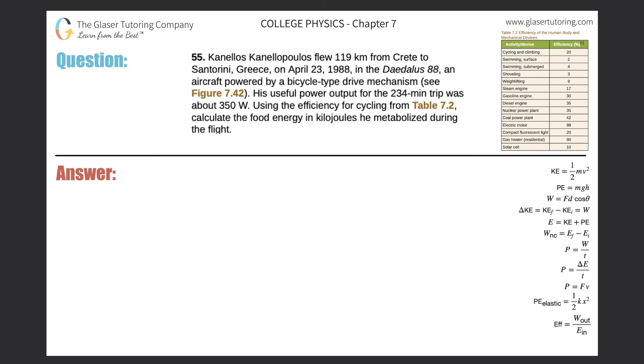Number 55. Canelos Kalanopoulos flew 119 kilometers from Crete to Santorini, Greece on April 23, 1988, in the Daedalus 88, an aircraft powered by a bicycle-type drive mechanism. His useful power output for the 234-minute trip was about 350 watts. Using efficiency for cycling from table 7.2, calculate the food energy in kilojoules he metabolized during the flight.